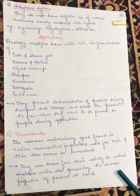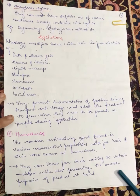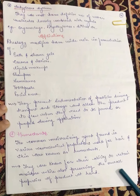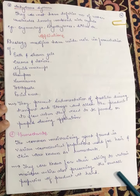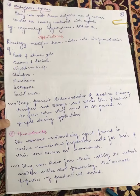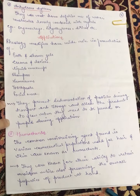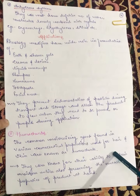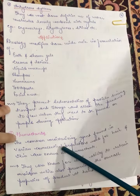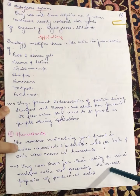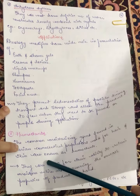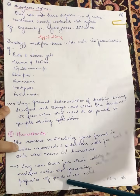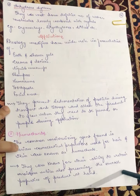If we are using any cosmeceutical product, for example our creams or lotions, we need to keep our body hydrated and moisturize our skin. We need to make sure that we don't have dryness from our skin. So, the common moisturizing agents found in various cosmeceutical preparations used for the hair and skin are known as humectants. They are known for their ability to retain moisture while also preserving the overall properties of the product at hand.